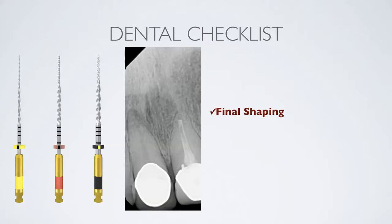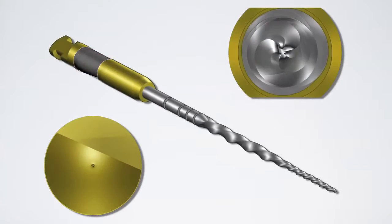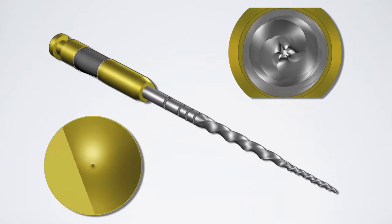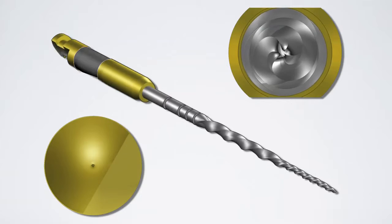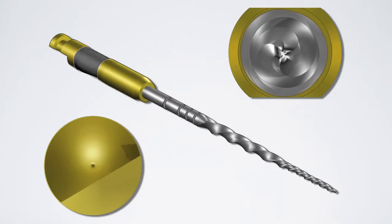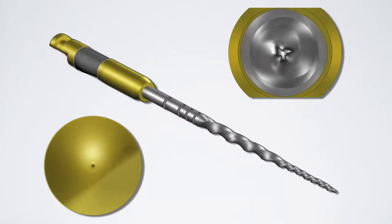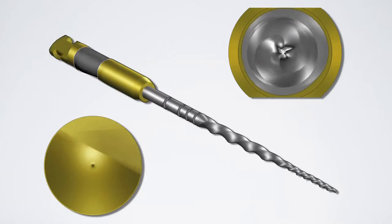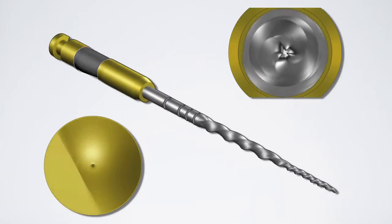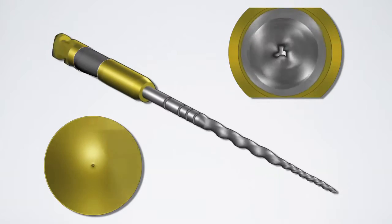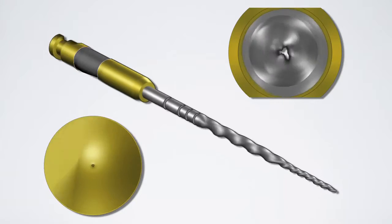This file has a tip size of 40 with a progressive taper. The Wave 1 reciprocates instead of rotates, and this unique motion allows for faster propagation to the apex. In this case I allowed the file to run in three-millimeter increments while irrigating and recapitulating between segments. When I reached my working length I stopped and re-irrigated.